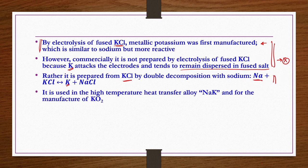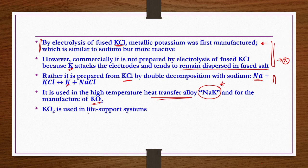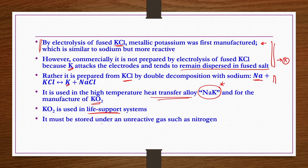Metallic potassium is used in the high-temperature heat transfer alloy NaK (sodium-potassium alloy). It is also used for the production of KO₂, which is used in life support systems. Because it is very reactive, KO₂ is stored under an unreactive gas such as nitrogen.